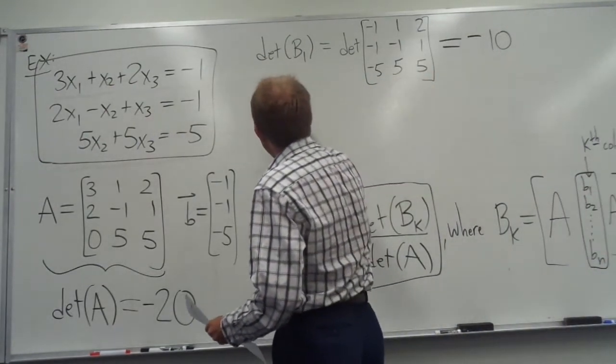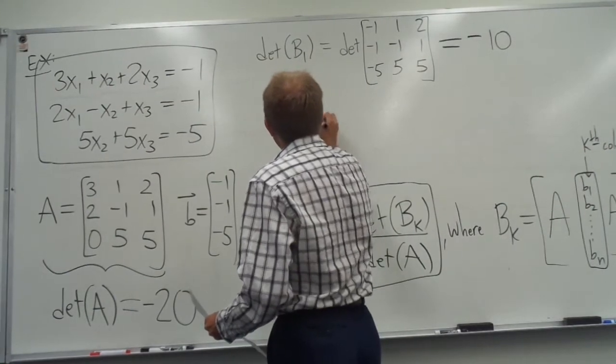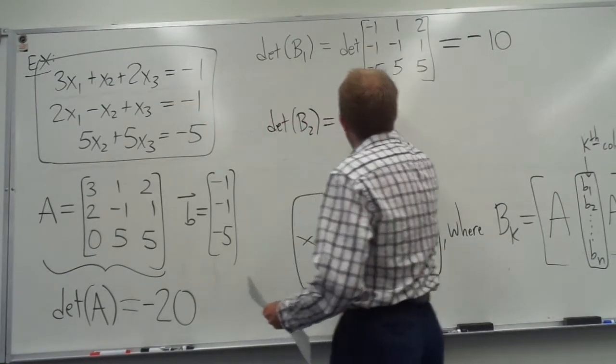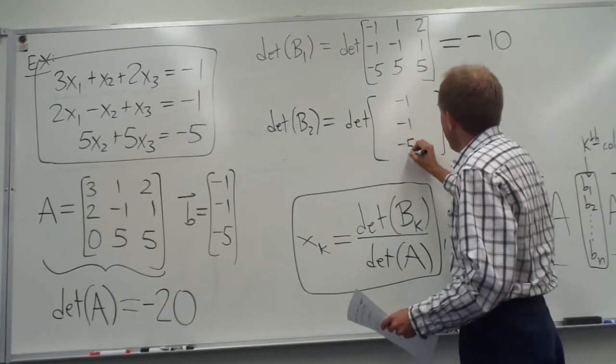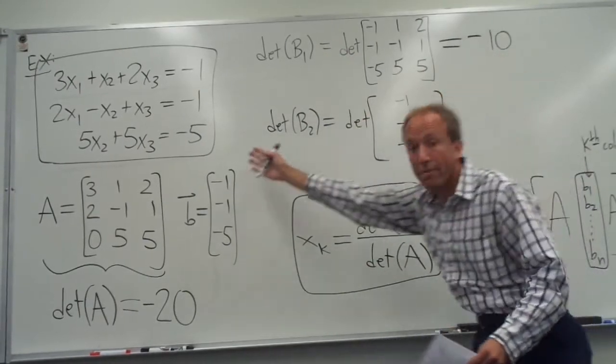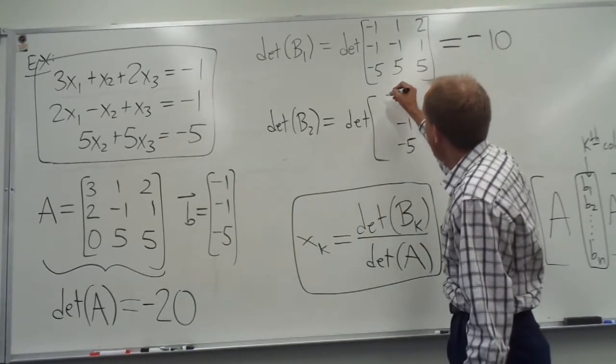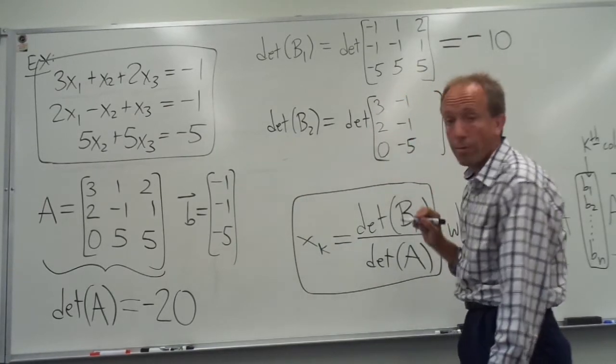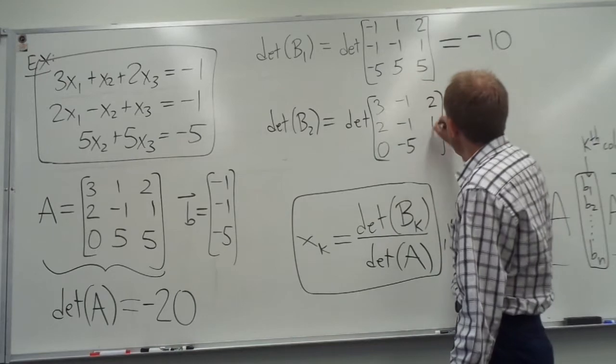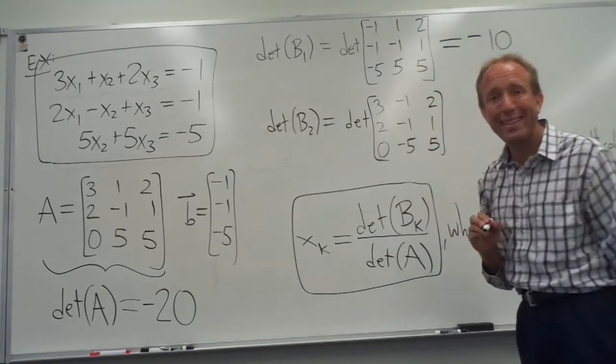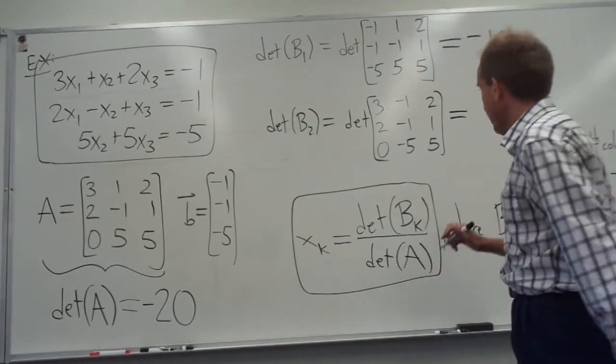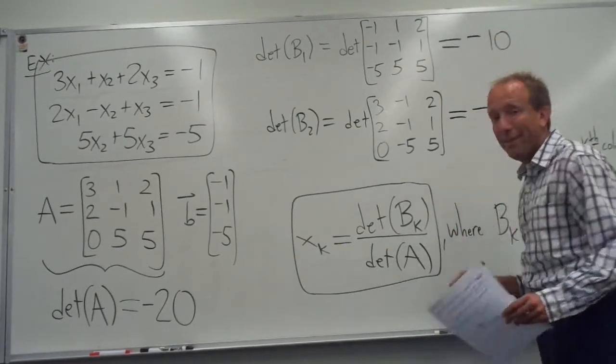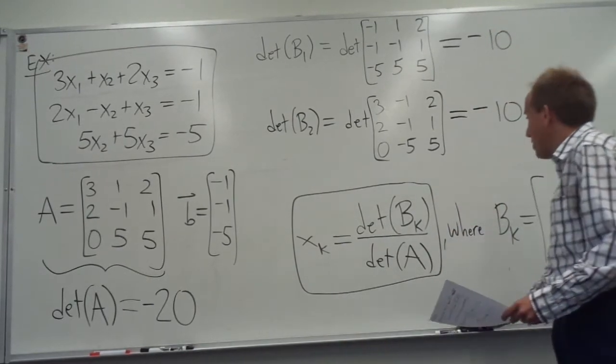Now let's do B2. B2 is, the only difference is that now the second column is going to be the one that we replace with the B vector, right? And the first column of A stays the same as it was originally, and the third column stays the same as it was originally. And if you work that out, just by a pure coincidence, it also comes out to negative 10. I'll let you guys check that, though.